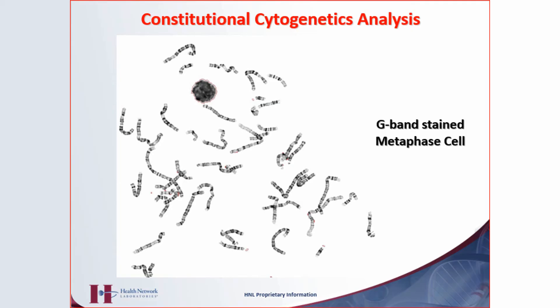So after we stop it at metaphase, prepare it on the slide, and do G-banding — this is literally what we see. We have a bunch of squiggly looking worms sitting on the slide, and we're supposed to make heads or tails out of it.